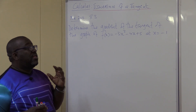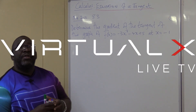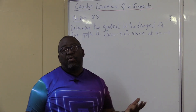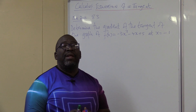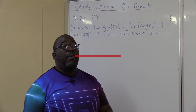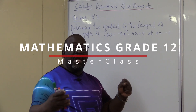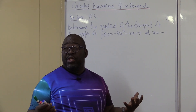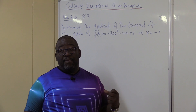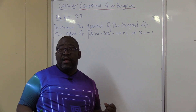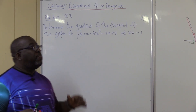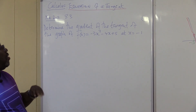Determine the gradient. In this case, we're not required to find the whole equation. Other questions might want you to find both M and C — that's where you find the whole equation. So you must have a point and a gradient to be able to find the full equation.